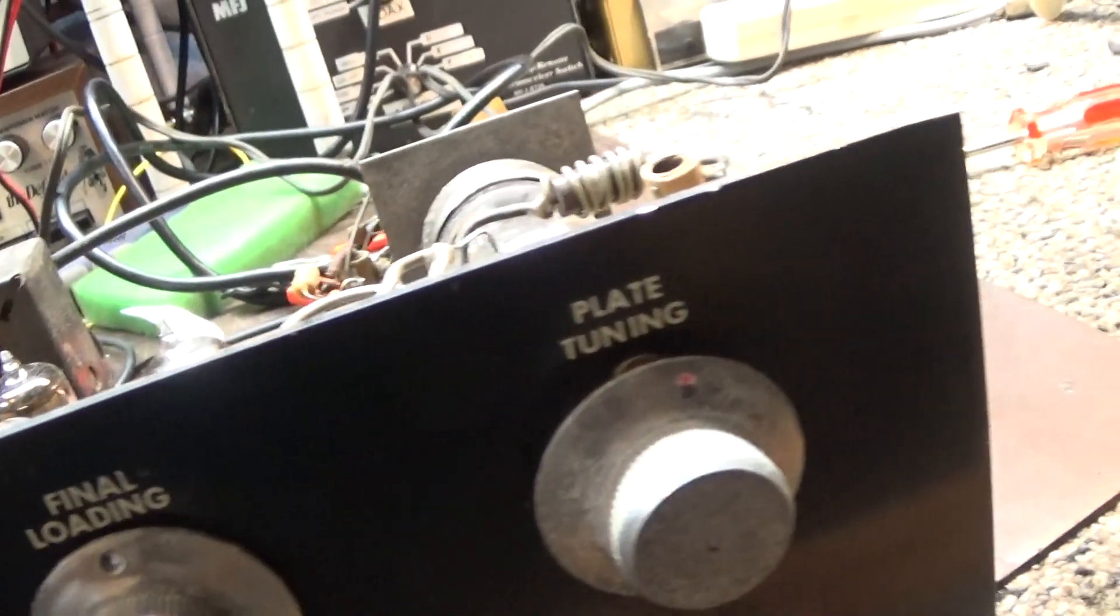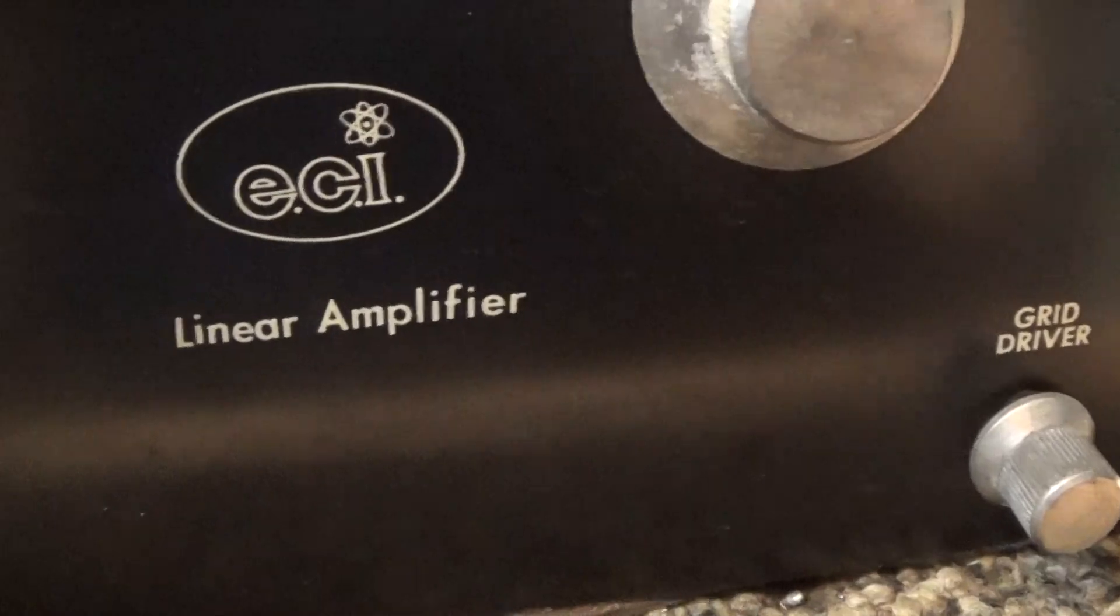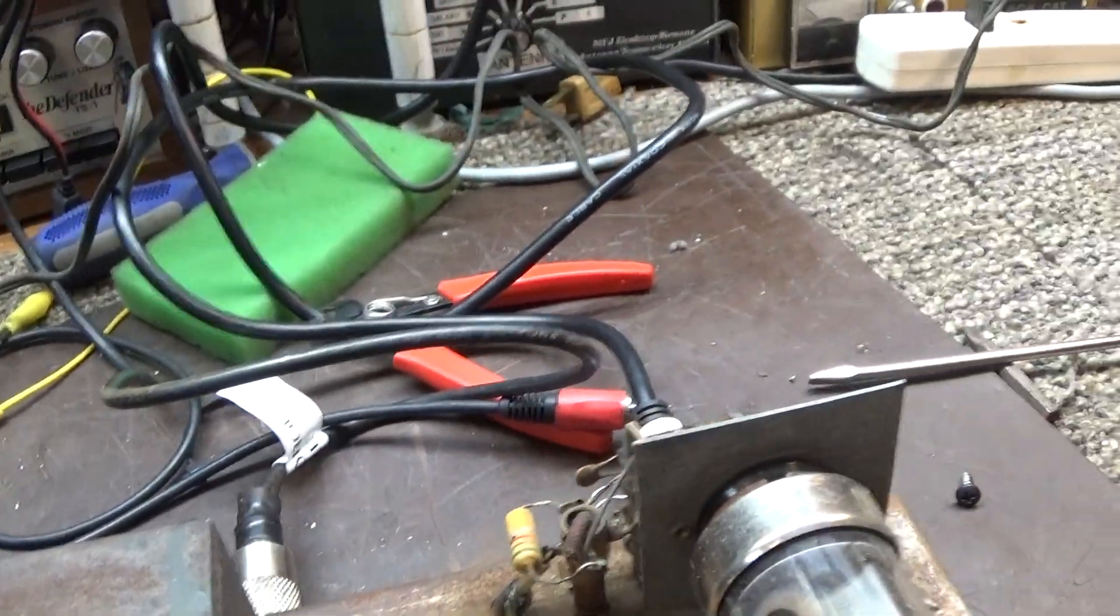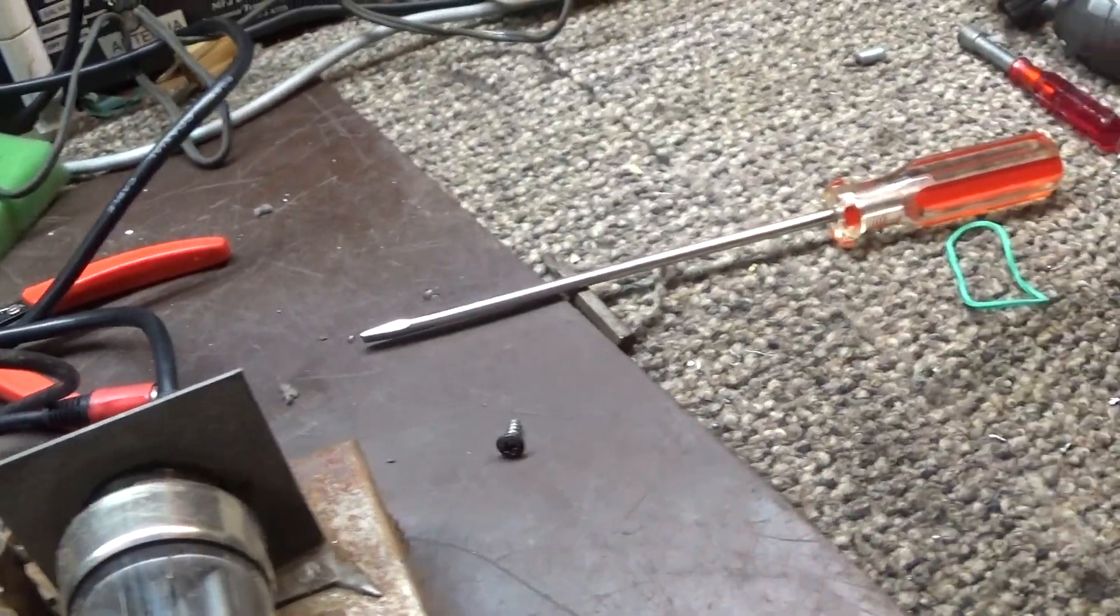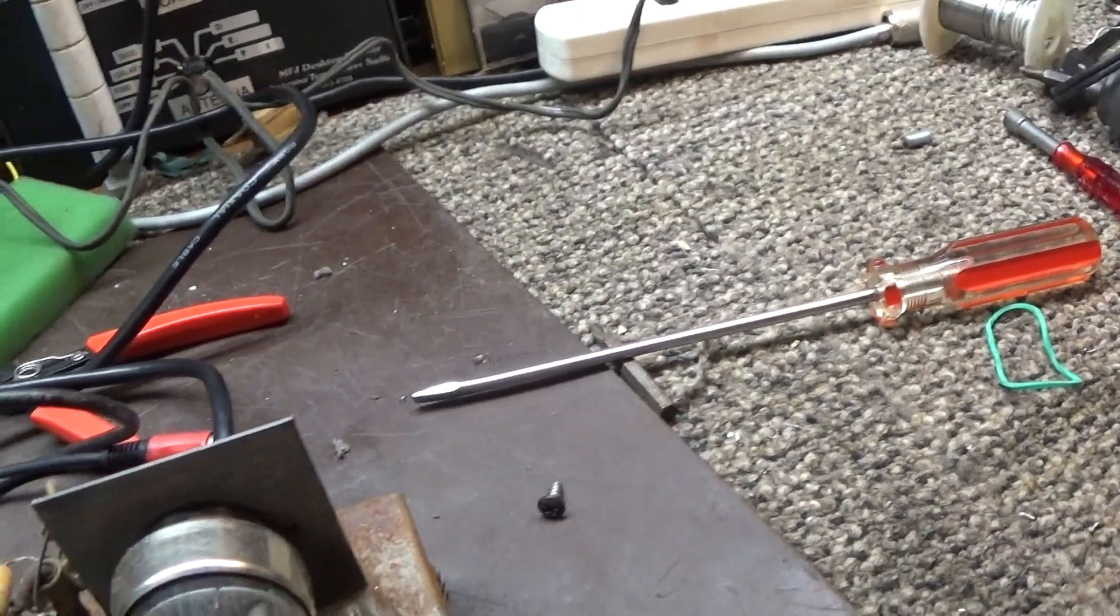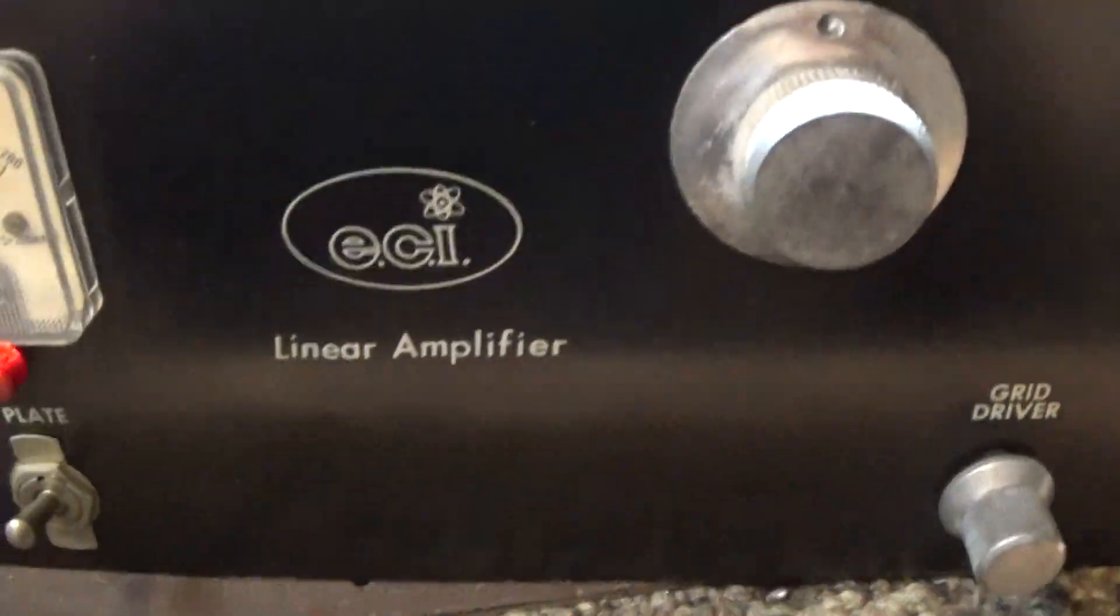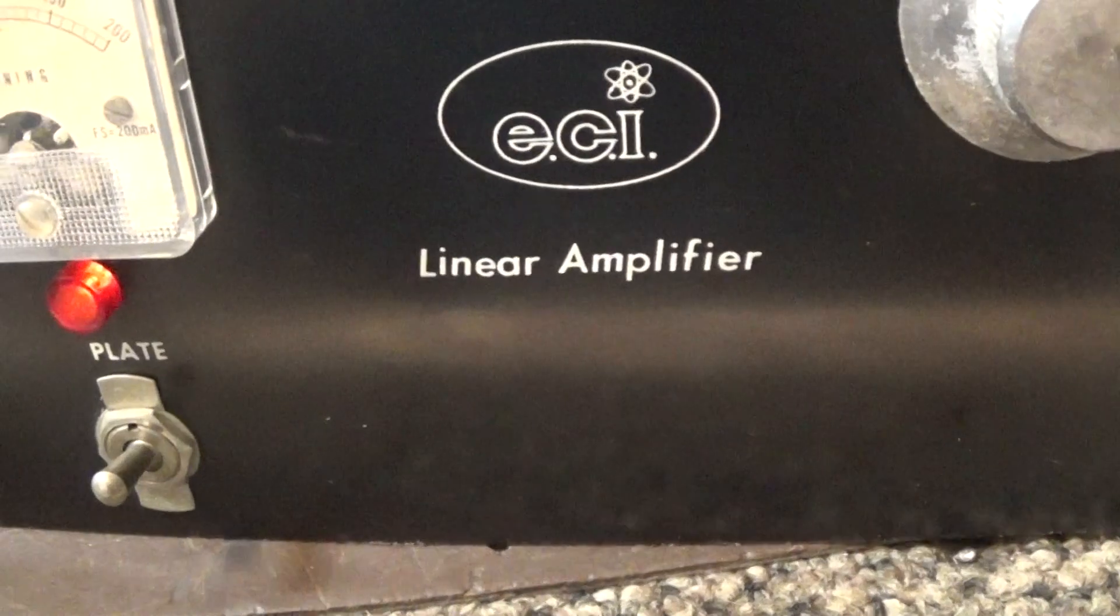So that's how this little ECI courier 1-2 modulator works. Old rust bucket ain't done nothing to it just pulled it out the closet and fired it up and that's about all we're going to do to this thing so that's going to be it for today on the ECI courier linear amplifier.